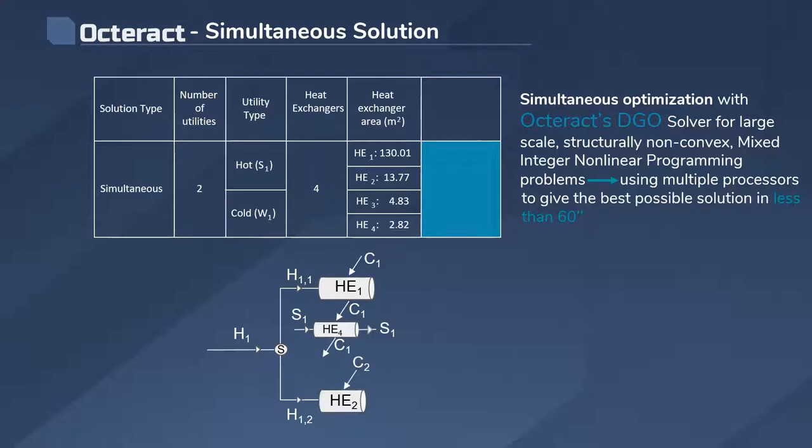C2 interacts with the second substream of H1 in heat exchanger two. Then the two substreams of H1 meet again and H1 is further cooled down in heat exchanger three with the use of cold utility W1.